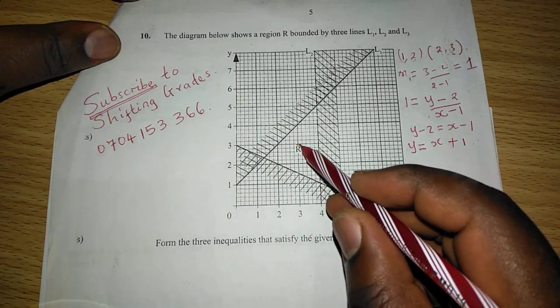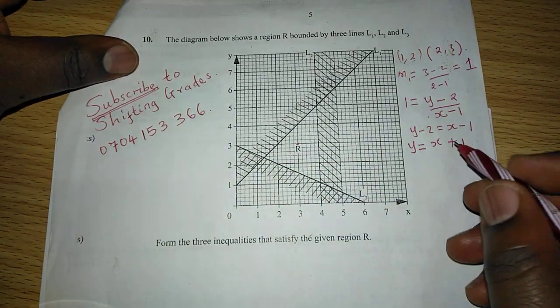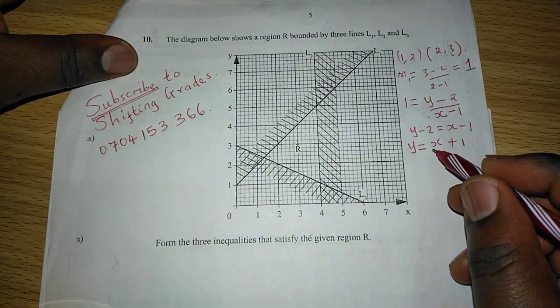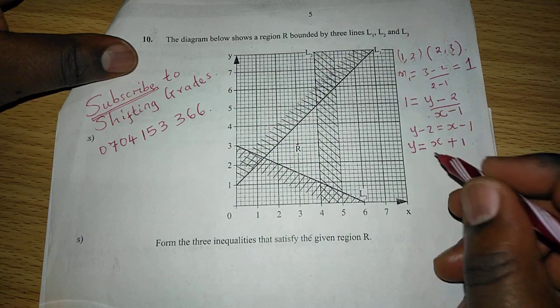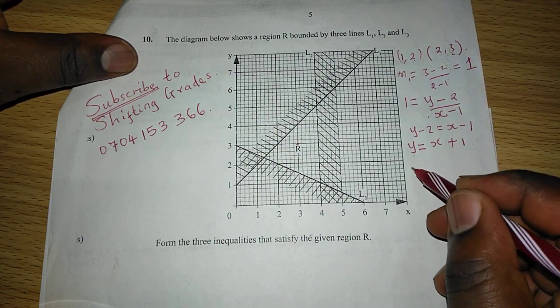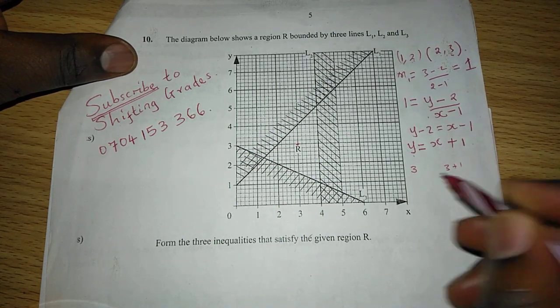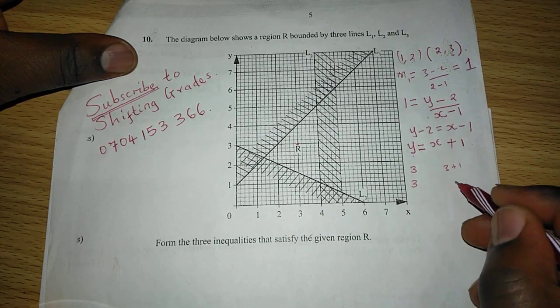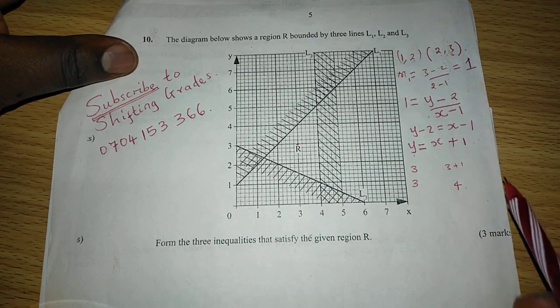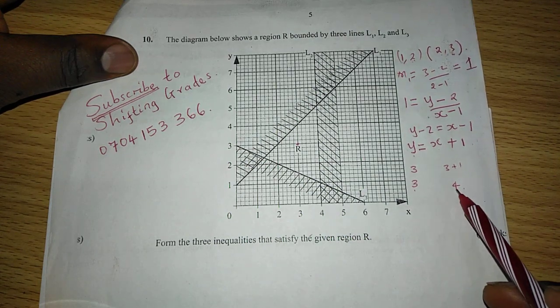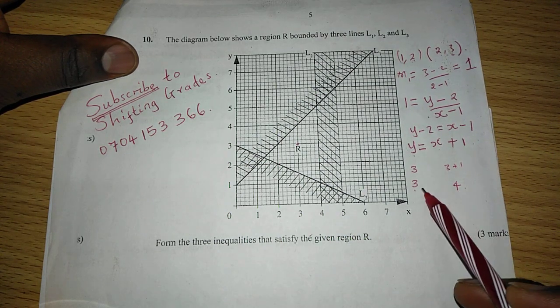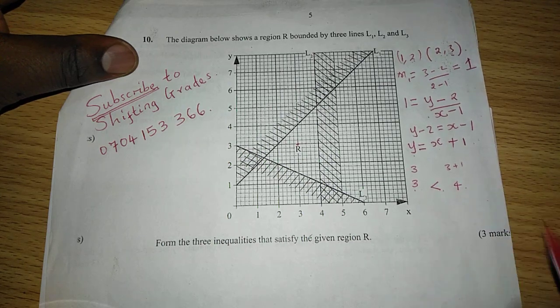So because coordinate 3, 3 is in the required side, then we can have 3 where we have Y and 3 where we have X, such that instead of Y we have 3, and instead of X we have 3 plus 1, such that we have 3 on this side and 4 on this side. So the relationship between 3 and 4 is that 3 is less than 4.